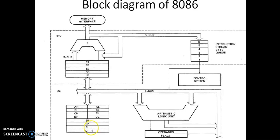Coming to SI and DI, they are called index registers and they are used in string operations. Whenever you need to perform string operations, SI — the source index register — is used for the source string, and DI is used to hold the destination string addresses. These are the different registers available in the execution unit, and each register has some specific functionality. We will discuss the specific register functionalities in the next class.